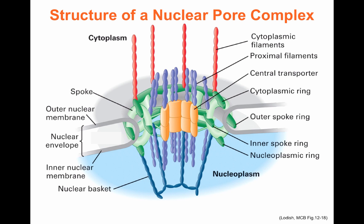At the nuclear pores, we have a nuclear pore complex that spans the double nuclear envelope. On the inside of the nucleus, where the nucleoplasm is found, you have a structure with spokes, proximal filaments, and what is called the nuclear basket, forming a filter ring. You have cytoplasmic rings that allow the structure to assemble nicely, and on the outside next to the cytoplasm, there are cytoplasmic filaments. This structure serves as a sieve to allow only molecules that have particular signals to come in, and not everything to diffuse across the nuclear pore.